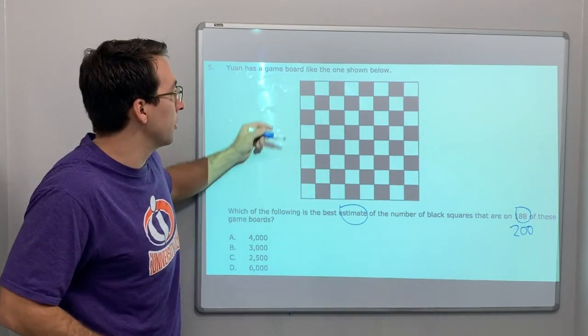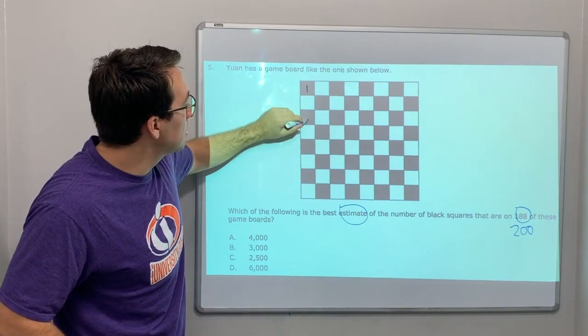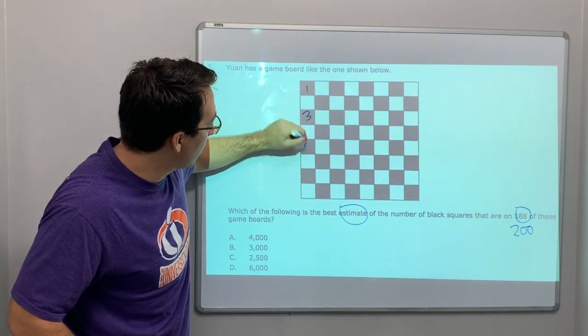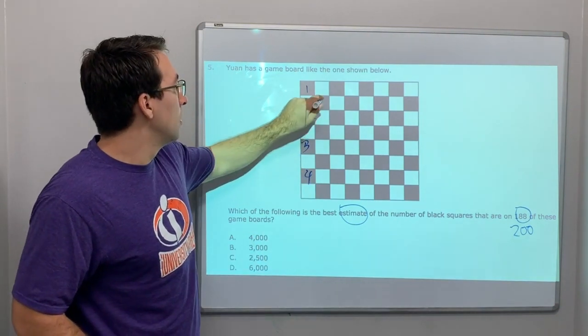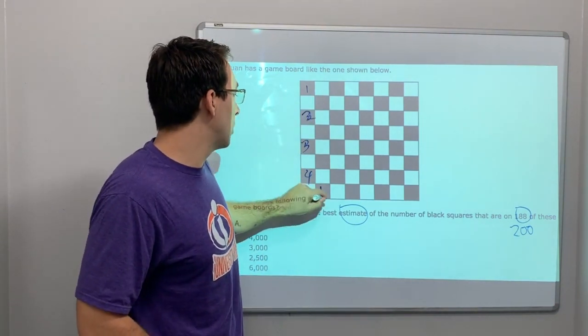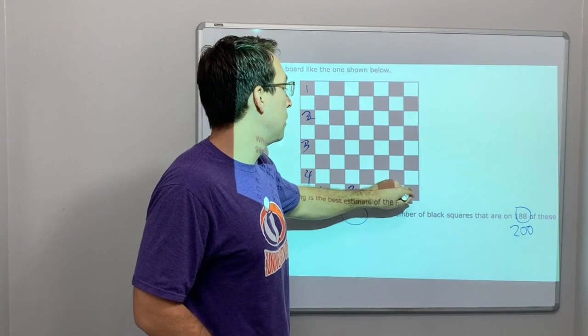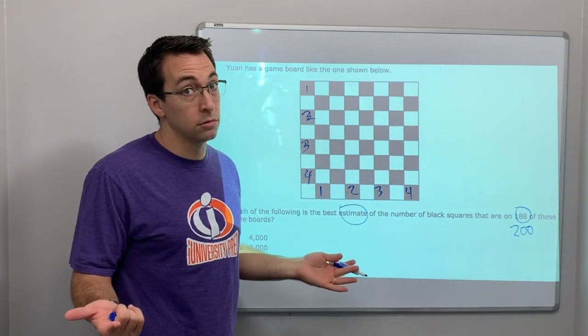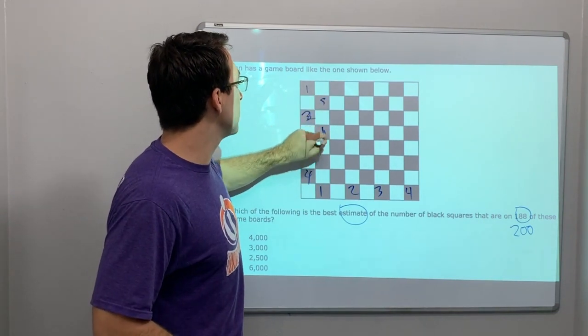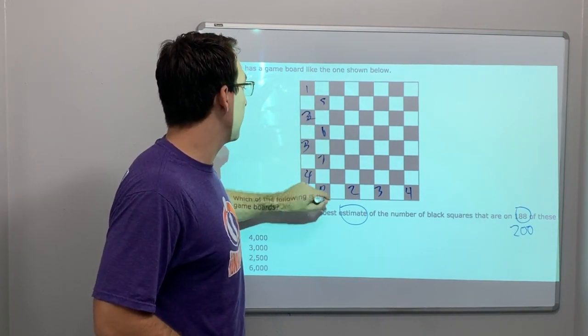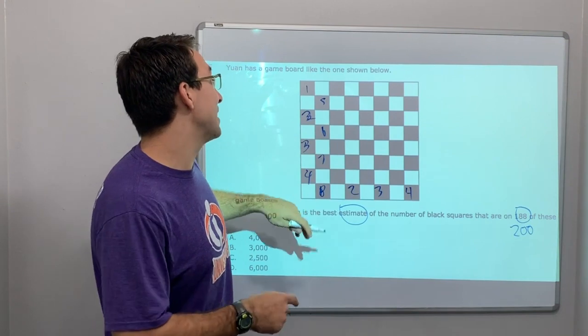How many black squares are there? 1, 2, 3, 4. Right? And so, 1, 2, 3, 4. What is 4 times 4? 4 times 4 is 16, right? Or you could just count them out. 5, 6, 7, 8. Oh, I messed that up.